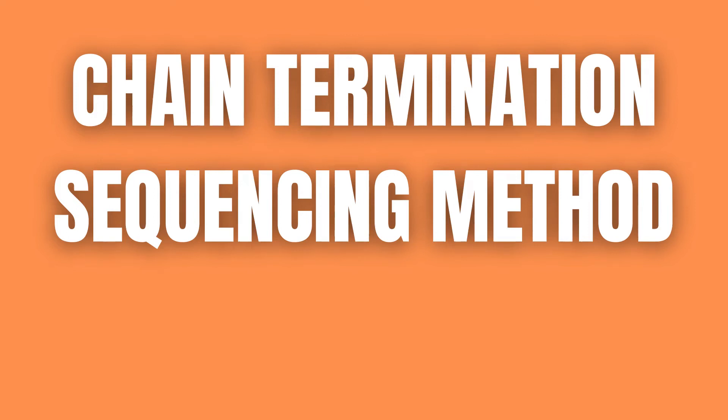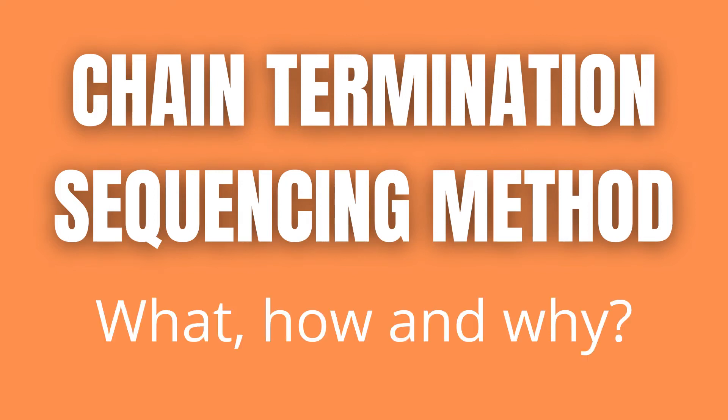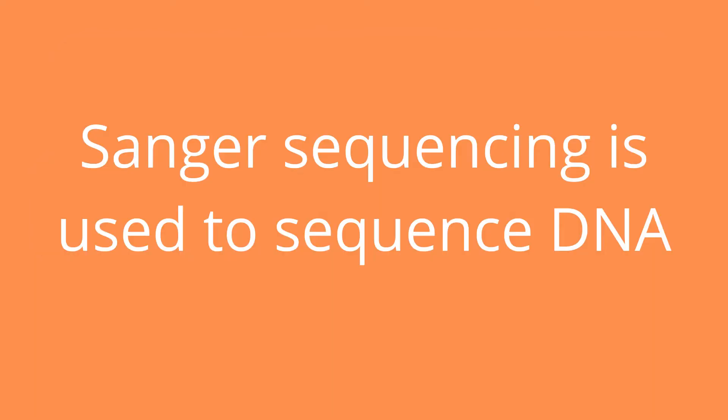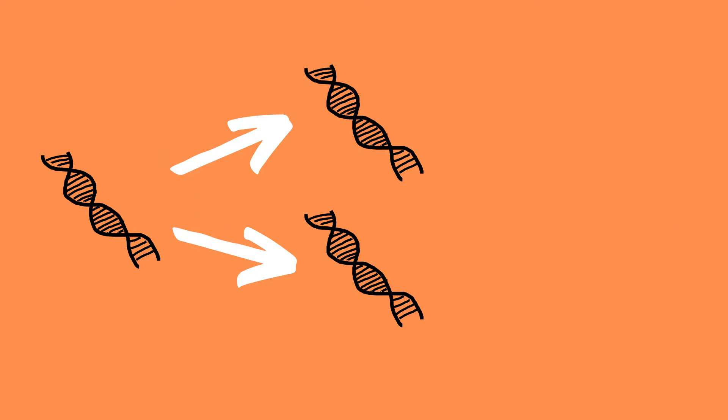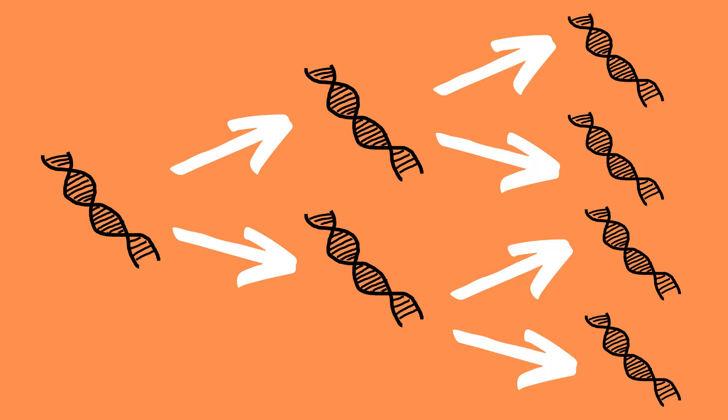Chain termination sequencing method — what is it, how does it work, and why is it useful? Chain termination sequencing, or Sanger sequencing, is a way to determine the nucleotide sequence of DNA. Sanger sequencing works by creating multiple copies of a target DNA region.